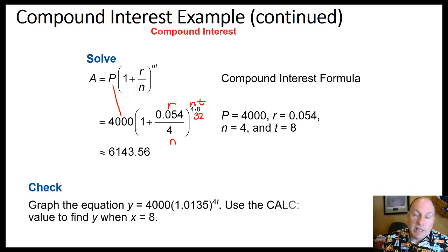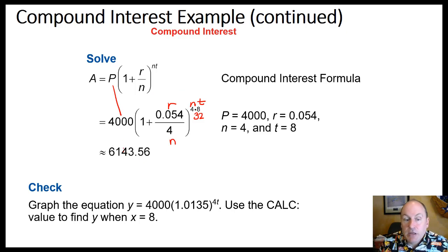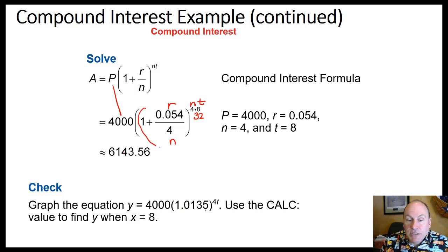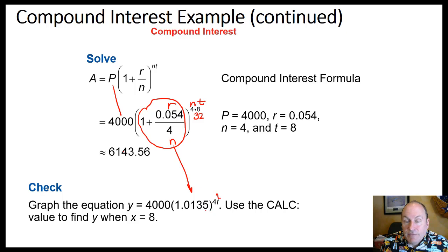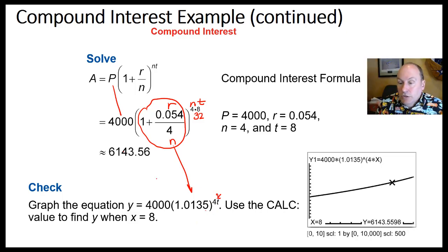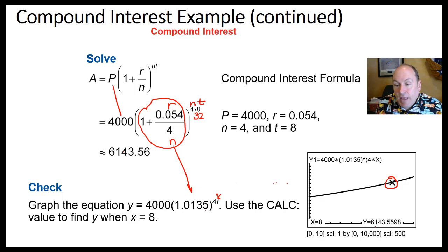When you put all that into your calculator, you get $6,143.56 — that's how much your investment would be worth after eight years. Note that the base in parentheses simplifies to 1.0135. If you raise 1.0135 to the 4t power and graph it, zooming in at x equals 8 confirms the value of $6,143.56 graphically as well.